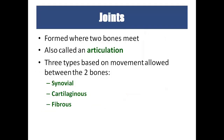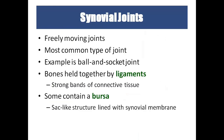Joints are the place where two bones meet — also called articulation. There are three types of joints based on movement: synovial (freely movable), cartilaginous, and fibrous. The synovial joint, such as the ball-and-socket joint at the shoulder and hip, allows free movement. Bones at joints are held by ligaments and strong bands of connective tissue. A sac-like structure called bursa is lined with synovial membrane.